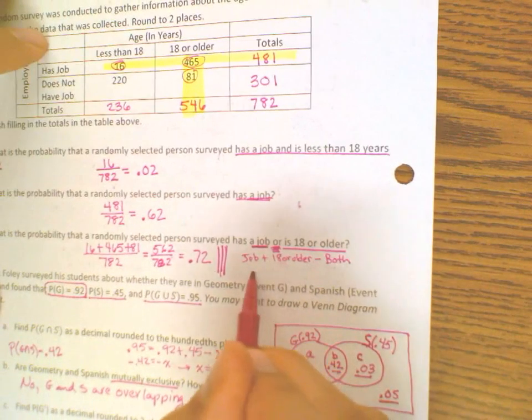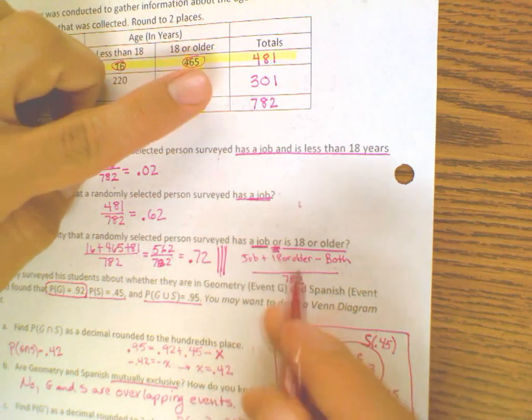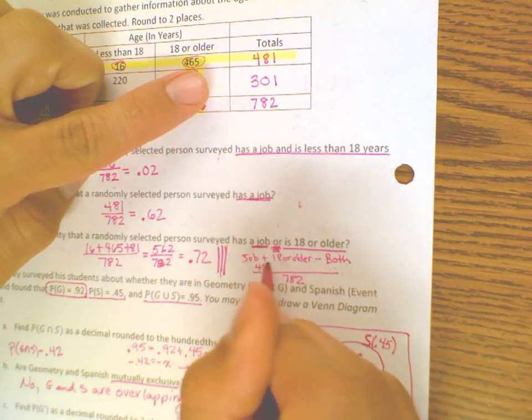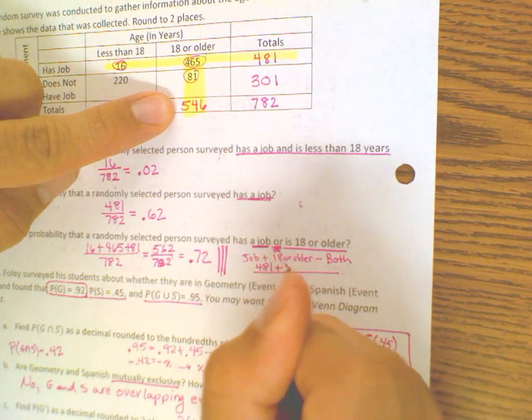So the people, I know it's out of 782, so the people who have a job is how many? 481. The people who are 18 or older, it's 546.